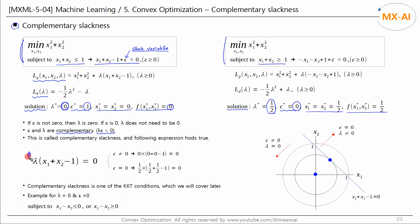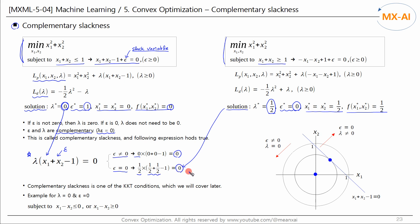Then the equation below holds true. This part is the slack variable epsilon. Let's put the optimal solutions to the first problem into this equation. Since the epsilon is not zero but the lambda is zero, this expression is zero. Let's put the optimal solutions to the second problem into this equation. The epsilon is zero and the lambda is one-half. Since x1 and x2 are each one-half, this equation also becomes zero. Therefore, we can see that this equation holds true for the two examples above.